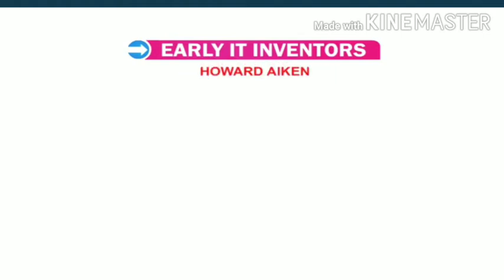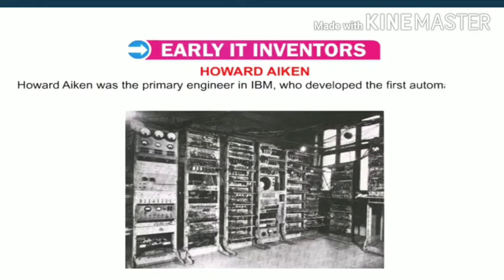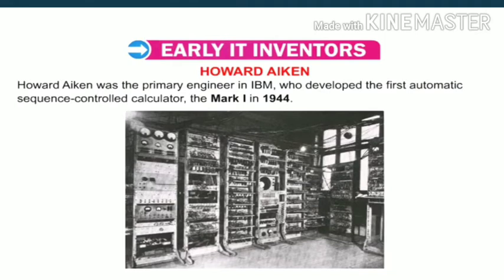Howard Aiken was a primary engineer at IBM who developed the first automatic sequence controlled calculator, the Mark I, in 1944. It was capable of executing long computations automatically.